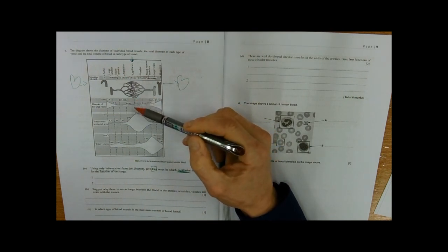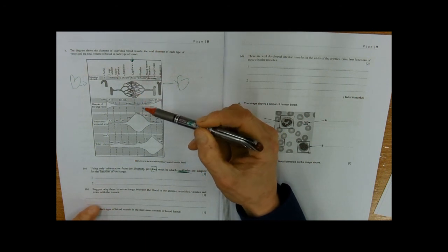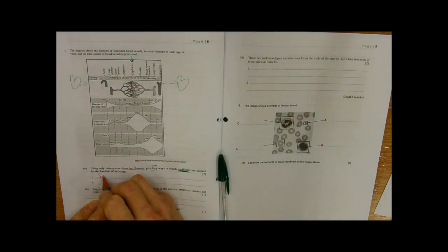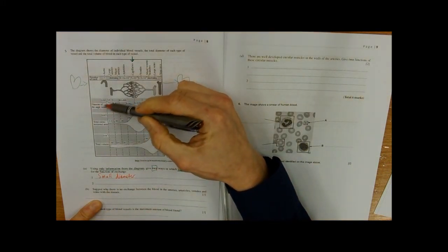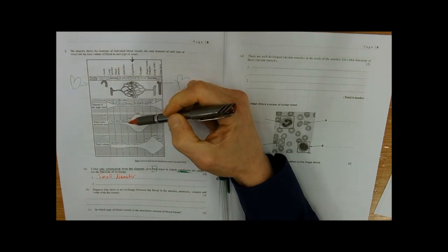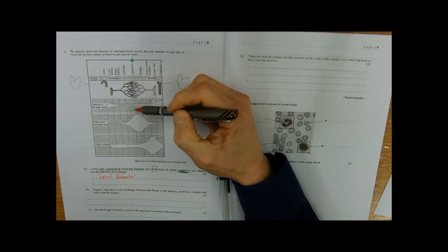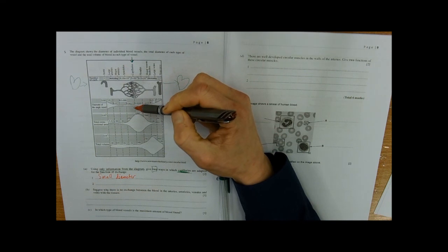For example, I would start off with the diameter, with them being very small, and that will help with diffusion. So I'm going to go for small diameter, and I'm saying the thing that is in the graph so there can't be any confusion. That would reduce the pressure, slow the blood down, and the diffusion distance would be less between that and the tissues.